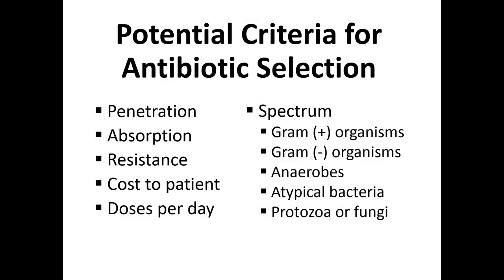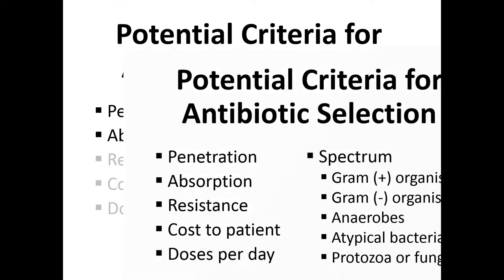That's a broad overview. Now let's talk about the thought process when selecting an antibiotic, focusing on the outpatient side. You have a patient in the clinic or urgent care, you've decided it's a bacterial infection, and you're trying to figure out which antibiotic to use. We're going to go through several aspects of drugs to consider, starting with penetration and absorption.